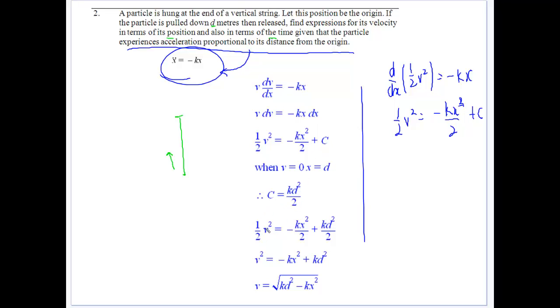If we put that in, we get half v squared equals minus kx squared plus kd squared over 2. So multiply by 2, we get v squared equals that. And v would equal the square root of kd squared minus kx squared. So there's our velocity in terms of position.